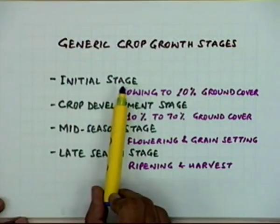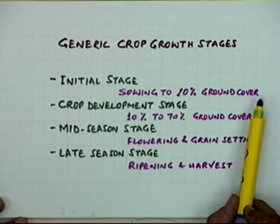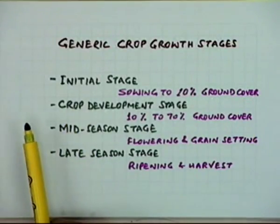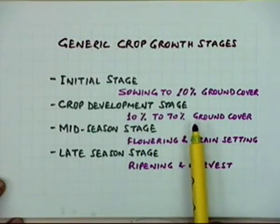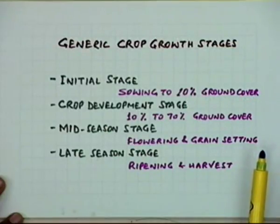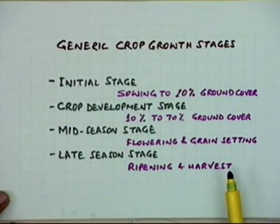The way FAO defines these stages: the initial stage is from sowing to 10% ground cover; the crop development stage is from 10% to 70% ground cover; the mid-season stage is when flowering and grain setting occur (corresponding to the differentiation stage in previous nomenclature); and the late-season stage covers ripening and harvest. Later we will look at how consumptive use changes as you go from one stage to another.